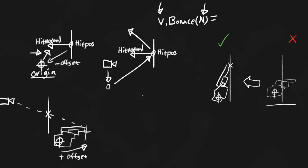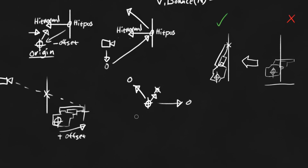We can't just add this to the origin to get a look rotation, because the look rotation would be back behind the origin. So instead, we'll take the current look direction and this look direction and get somewhere right in between the two — this makes the gun tilt up nice and clean. We don't want to immediately go to this though, so we're going to have a tilt weight and use it to blend from the original rotation to the target rotation using a simple linear interpolation.